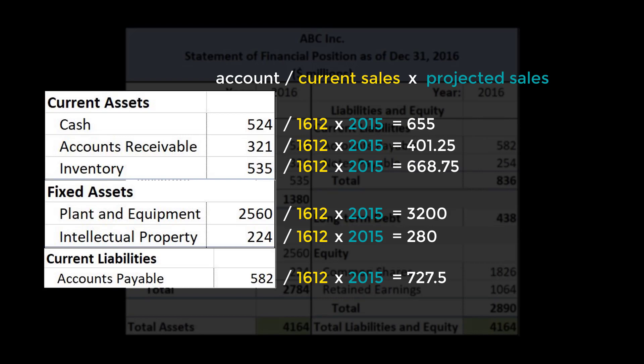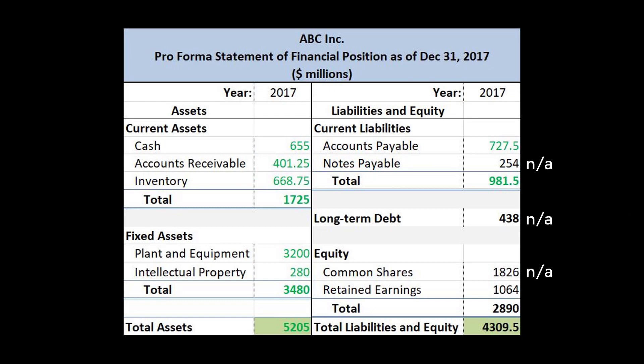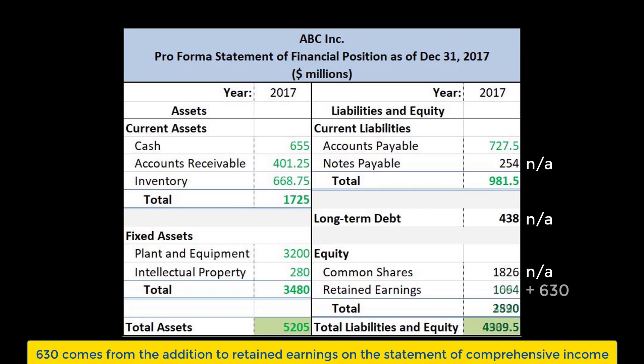As for the accounts that do not vary directly with sales — namely notes payable, long-term debt, and common stock — we leave them unchanged for now. Retained earnings does vary with sales, but we can't follow the two-step process with this. We have to calculate it explicitly, like we did when creating a pro forma statement of comprehensive income. On that, we had 630 as addition to retained earnings.